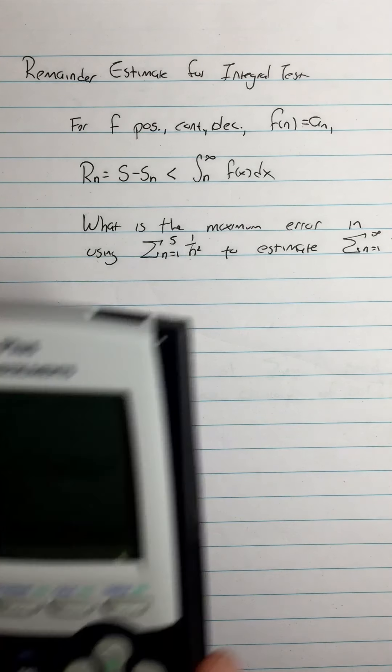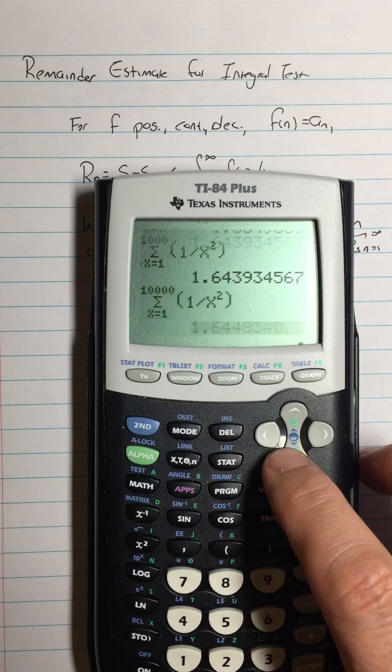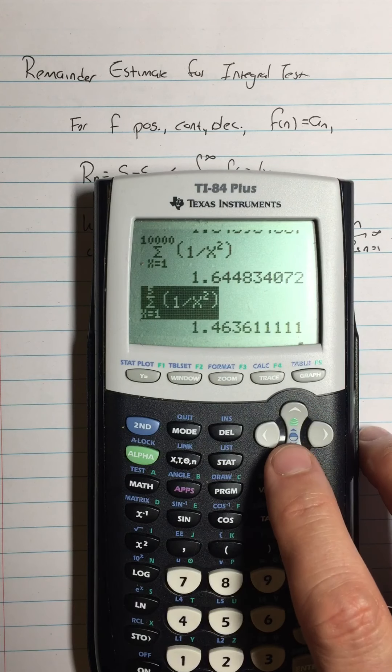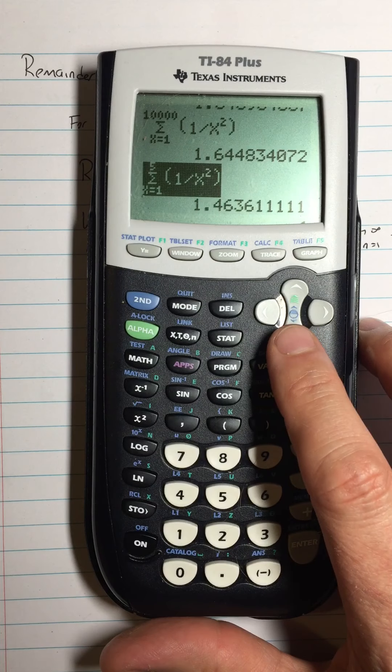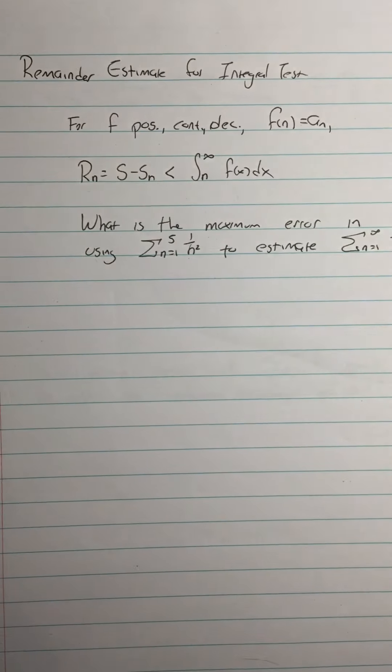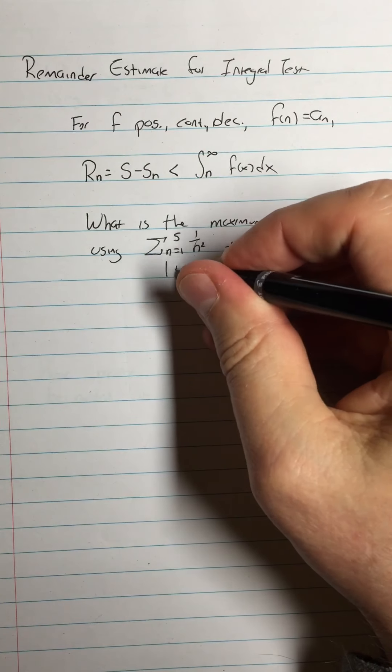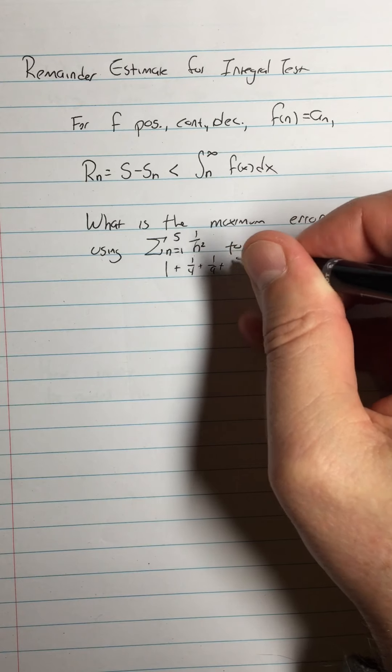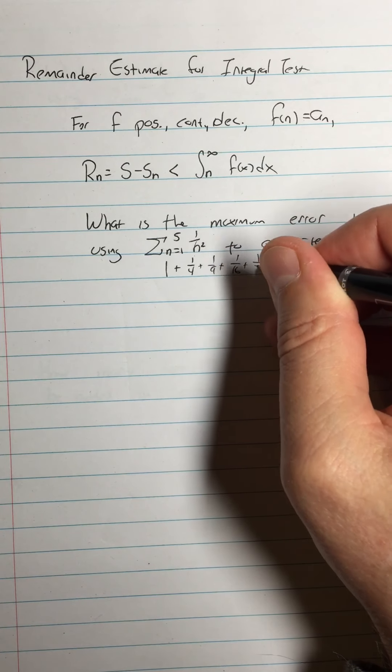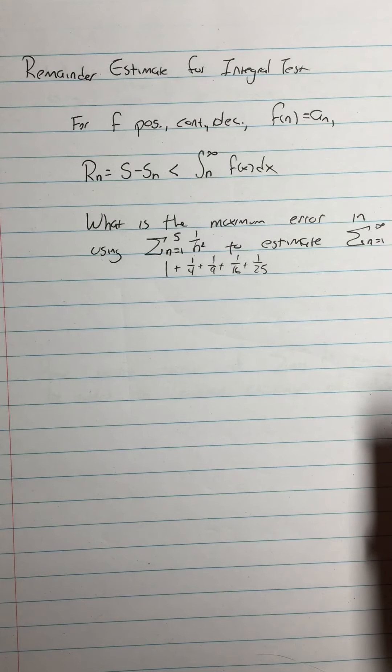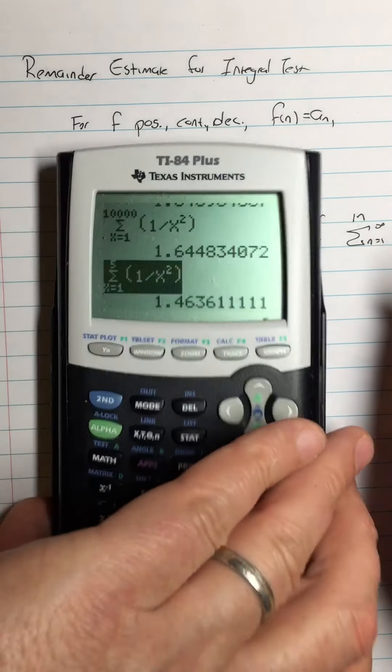So in other words, if I look at my sum that only goes to 5, so I'm only adding up 5 terms - 1 plus 1/4 plus 1/9 plus 1/16 plus 1/25, and I'm going to stop right there. And that equals this.